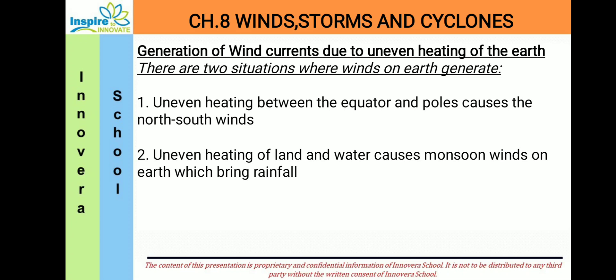Now let us see about the wind currents due to uneven heating of the earth. First of all, we need to understand the meaning of uneven heating of the earth. If we see the structure of the earth, in between we have the equator, and at the edges we have the north and south poles. When the sun rays fall on the earth, they do not fall evenly but unevenly.